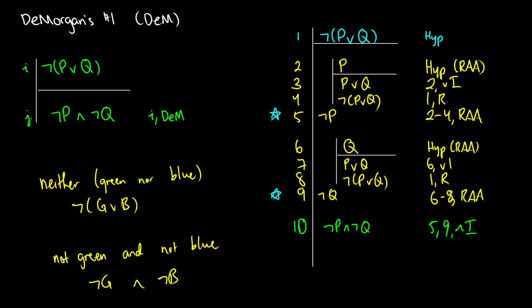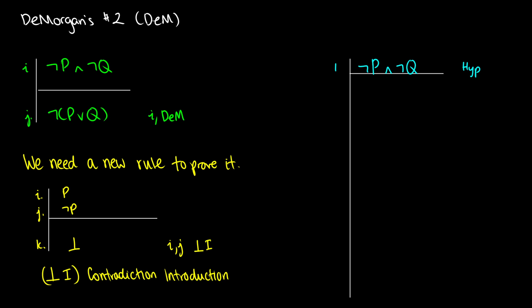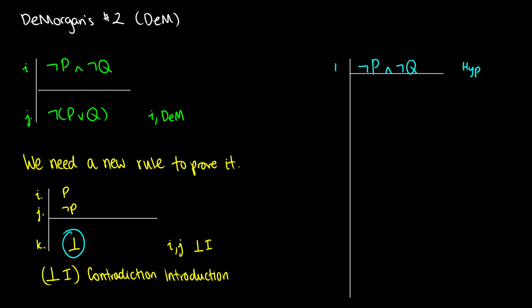So we've proven one direction of De Morgan's Law. Now let's prove the other direction — if we have not p and not q, then we get not (p or q). We actually need a new rule to do this: contradiction introduction. This is available in all of the systems. The reason we need it is because if we have p or q and want to get a contradiction for p or q, we essentially need to find a contradiction from p and from q. So the rule is: if we have p and we have not p, we can introduce the contradiction symbol.